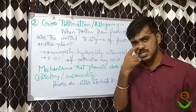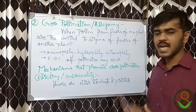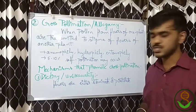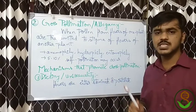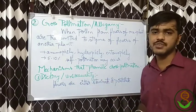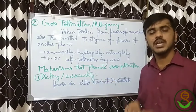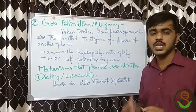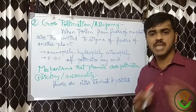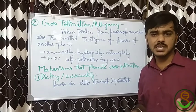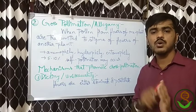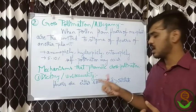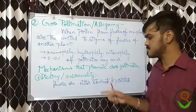We have seen that zero to five percent cross-pollination may occur in self-pollinated species; here, zero to ten percent of self-pollination may occur in cross-pollinated species. The mechanisms favorable for cross-pollination include first: dicliny or unisexuality, where flowers are either staminate — containing only stamens — or pistillate — containing only pistils.